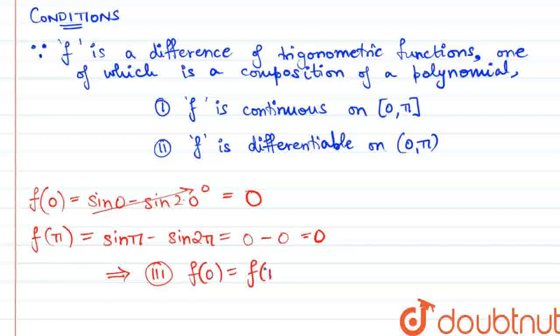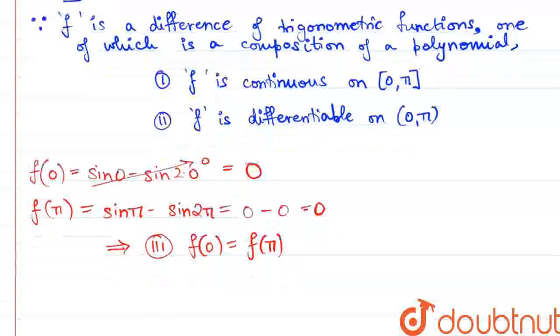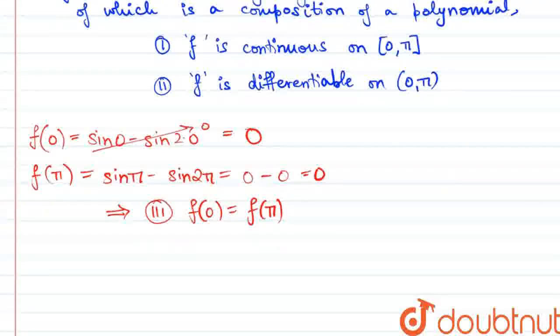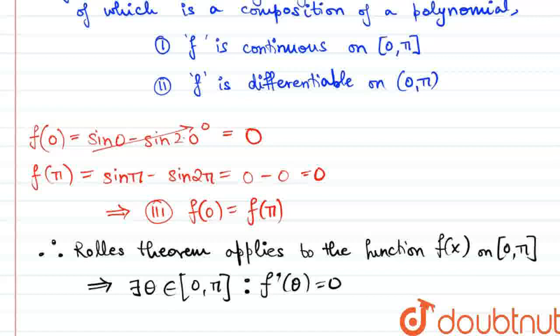We can clearly see that f of 0 and f of pi are both equal to 0. That is, the function evaluated at the endpoints of the interval is 0. Hence, we can conclude that Rolle's Theorem applies to the function f of x on the interval 0 to pi. That means that there exists a theta in the interval such that the derivative of the function evaluated at theta is 0.